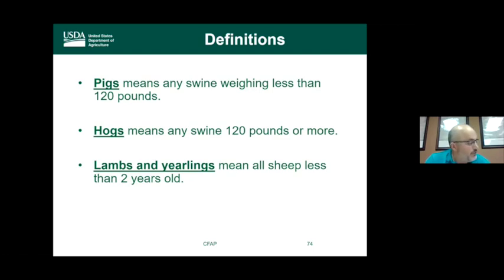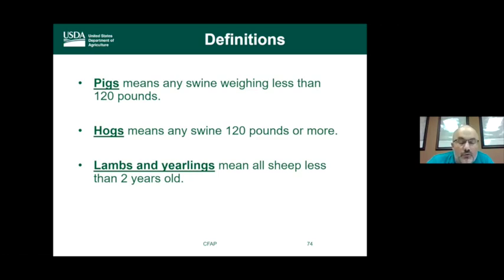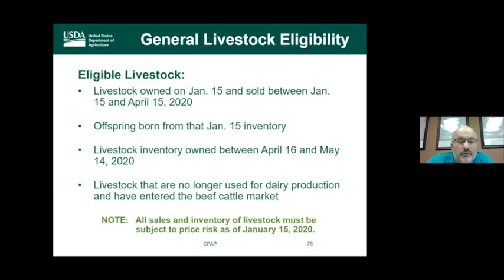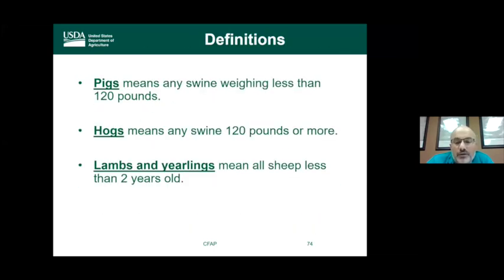For swine, there are two categories: pigs weighing less than 120 pounds, and hogs weighing 120 pounds or more. For sheep, there is one category — lambs and yearlings — defined as all sheep less than two years of age, with no weight requirement.